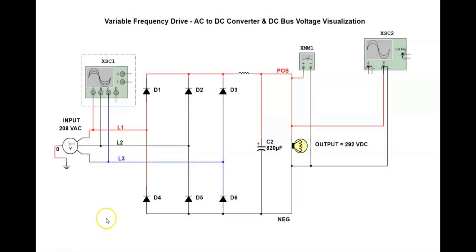I have a simplified drawing of the variable frequency drive. I have removed the inverter section and replaced it with a lamp which represents our load across the DC bus. This unit is fed with a 208 volt AC supply and the resulting DC output from that AC supply is 292 volts DC.